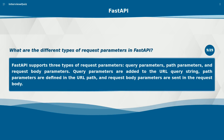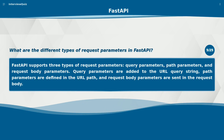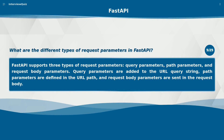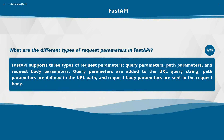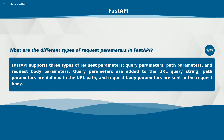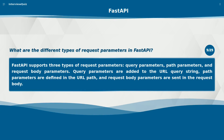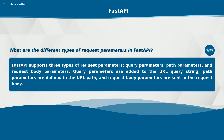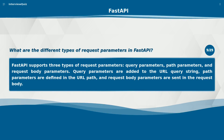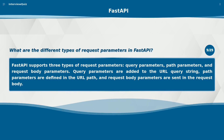What are the different types of request parameters in FastAPI? FastAPI supports three types of request parameters: query parameters, path parameters, and request body parameters. Query parameters are added to the URL query string, path parameters are defined in the URL path, and request body parameters are sent in the request body.